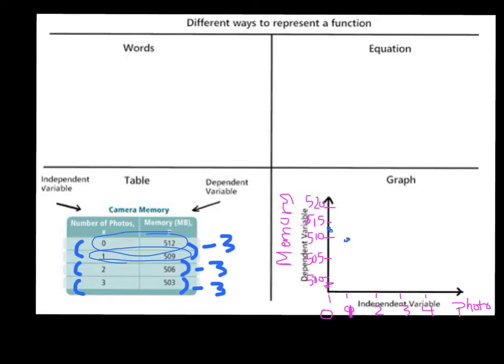2, 506. And 3, 503. Then I can connect these points and draw a little arrow. It is a line that would continue on.